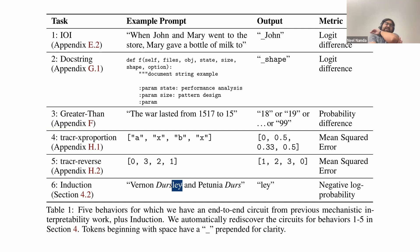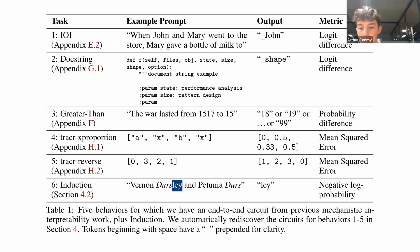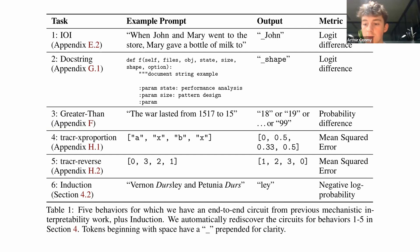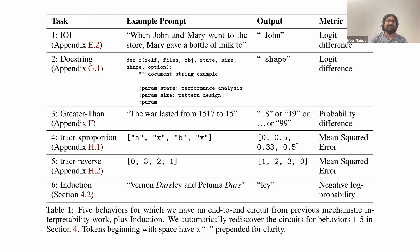Induction heads are a really big deal in models. The intuition is: if you know that 'Petunia Dursley' occurred in the past, it's obvious 'Dursley' is going to come next. Repeated text is very common and induction heads are a major part of how these models work. Contextualizing this in the literature: IOI, greater-than, and docstring are actual paper-level works that try doing this — IOI was published at ICLR. Tracr and induction are more like things you could apply the causal abstractions line of work to, rather than being the primary point of those papers.